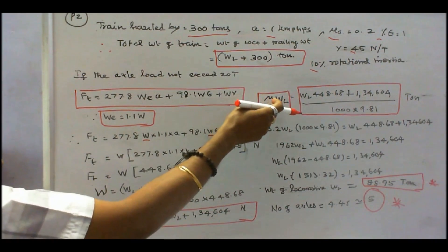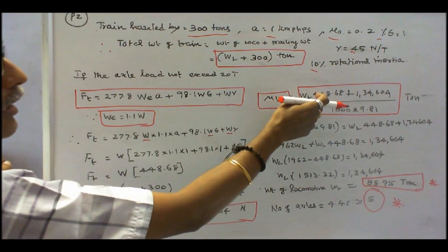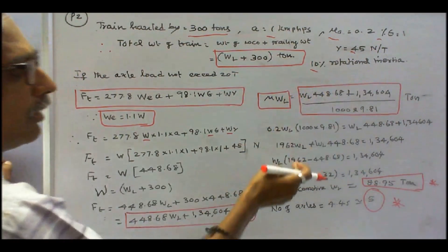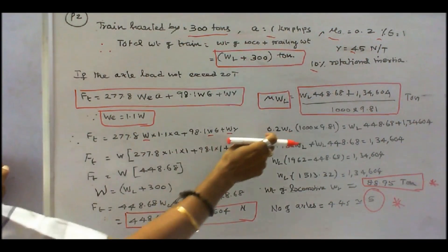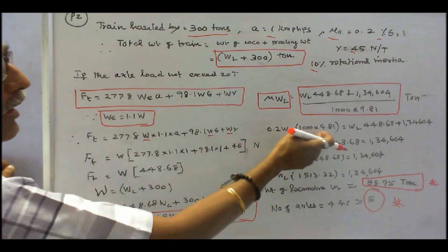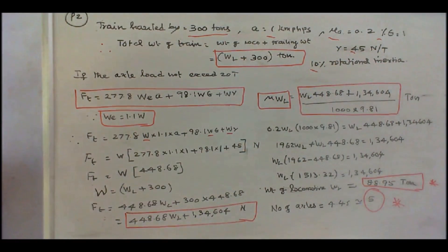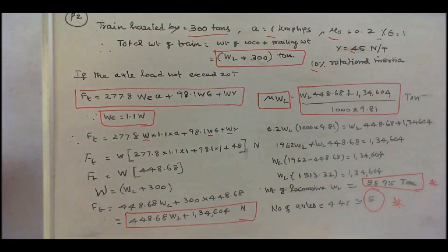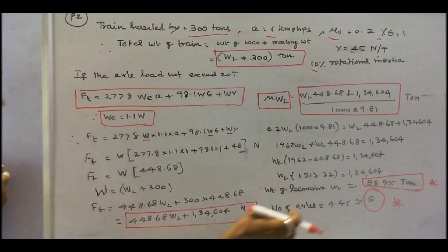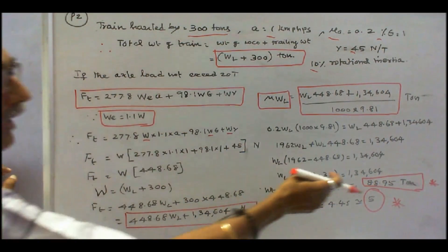Coefficient of adhesion into locomotive weight equals Ft. So 0.2 into WL into 1000 into 9.81 equals 448.68 into WL plus 134,604. Solving for WL gives weight of locomotive equal to 88.95 tons. If axle load must not exceed 20 tons, then 88.95 divided by 20 equals 4.45, which rounds up to 5. Therefore, the number of axles required is 5, and the weight of the locomotive is 88.95 tons.